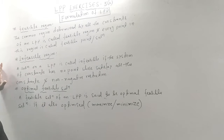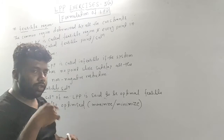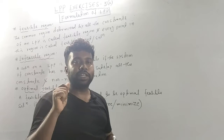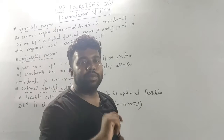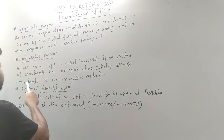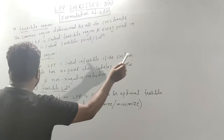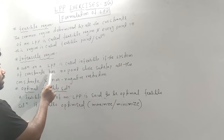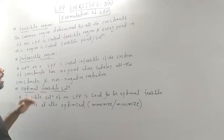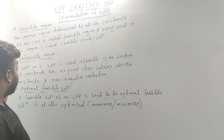Next is the infeasible region. The feasible region is the common region where all constraints are satisfied. The infeasible region means the system of constraints has no point that satisfies all the constraints — unsatisfied is the infeasible region.